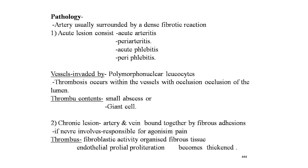Etiology of Buerger's disease: cigarette smoking, hormonal influence, lower socioeconomic group, poor hygiene, familial predisposition, autonomic overactivity, autoimmune etiology, and association with rickettsial disease. Pathology: the TAO artery is surrounded by dense fibrotic reaction. Acute lesions consist of acute arteritis, peri-arteritis, acute phlebitis, peri-phlebitis; vessels are invaded by polymorphonuclear leukocytes, and thrombosis occurs with occlusion of the lumen, containing small abscesses and giant cells. Chronic lesions: artery and vein bound together by fibrous tissue; nerve involvement is responsible for ischemic pain; fibroblastic activity organizes the thrombus, and endothelial proliferation thickens the vessel wall.